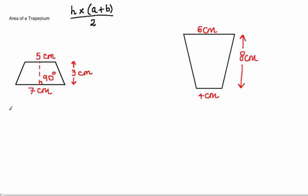So let's do the formula now. The perpendicular height, so that's 3, multiplied by the sum of the parallel lines, so 5 plus 7, and then divided by 2.